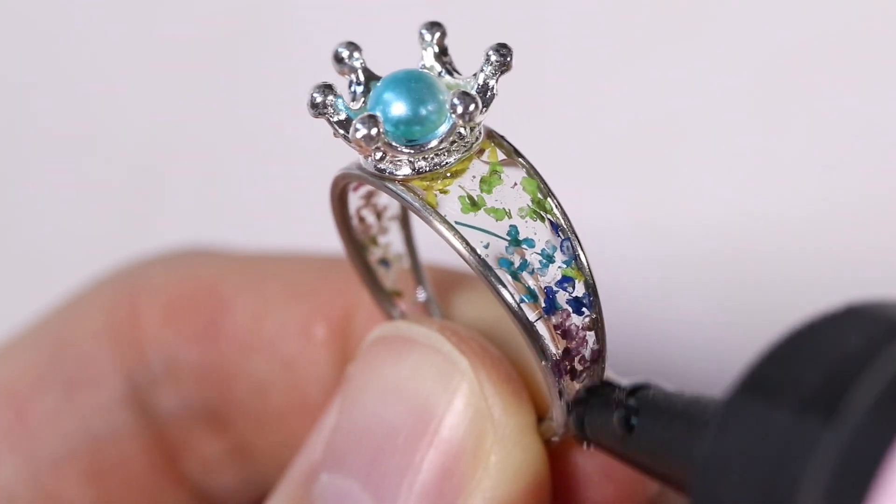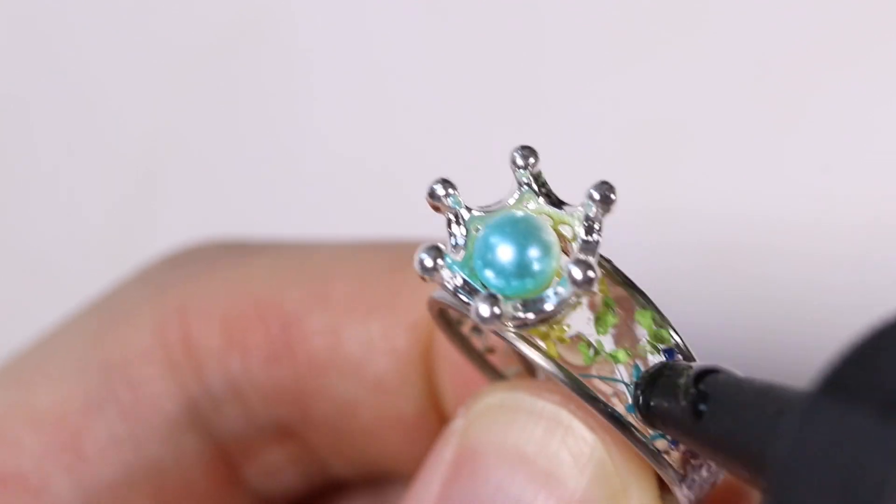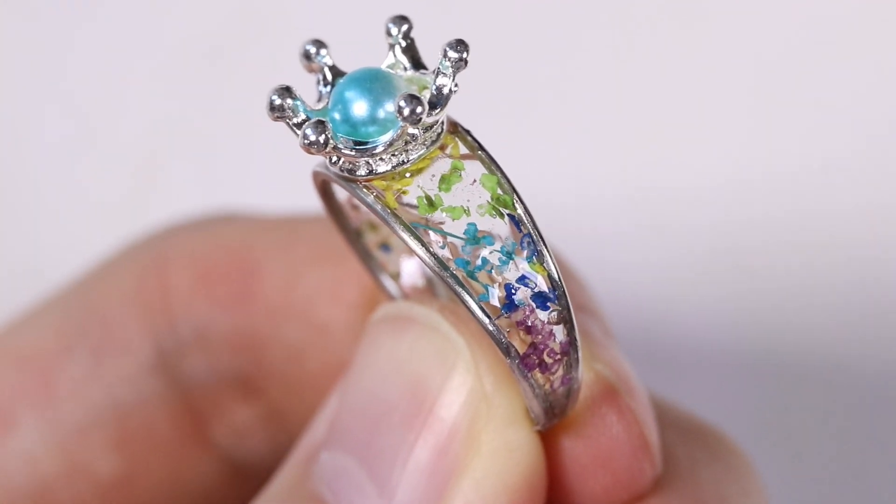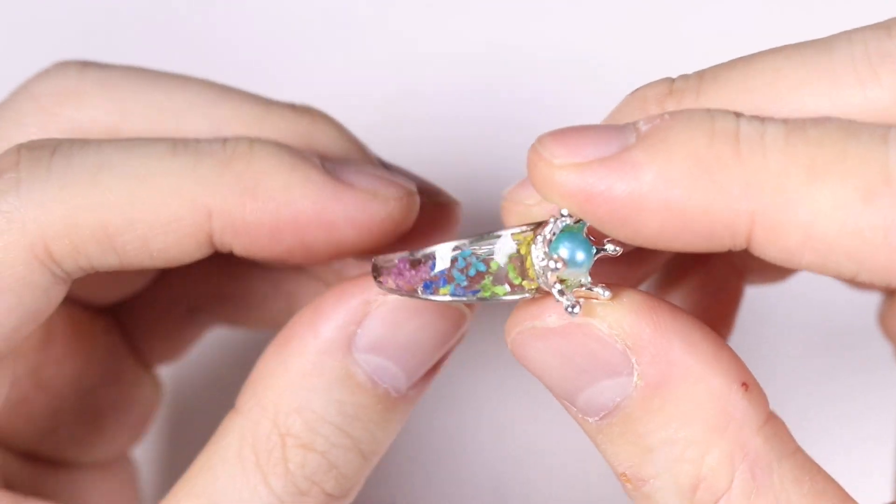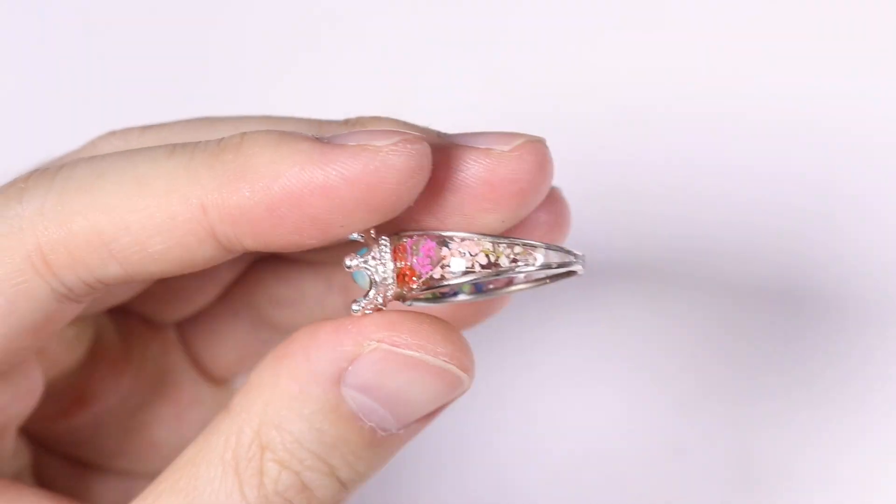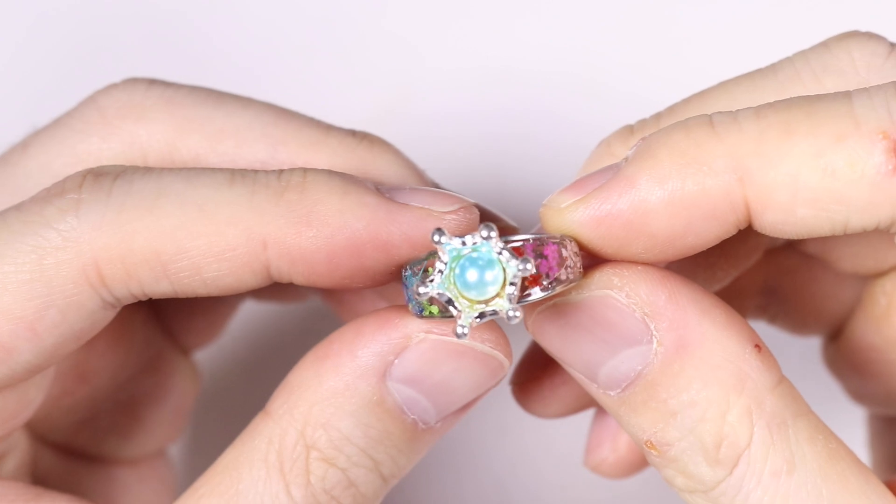And finally I'm just going to dome the sides of the ring just because the flowers are still kind of exposed. And here is the ring with the flowers in it. And I really like how this one turned out. I thought it turned out really cool.